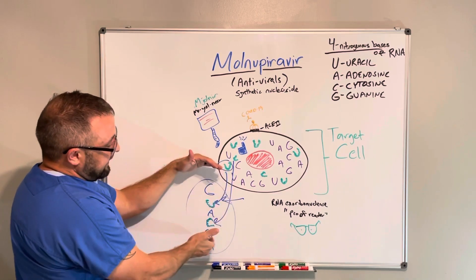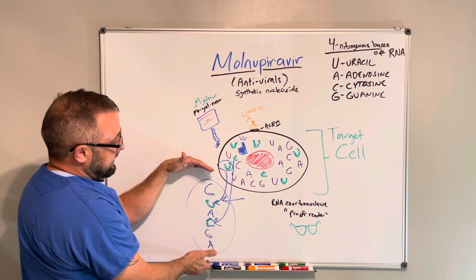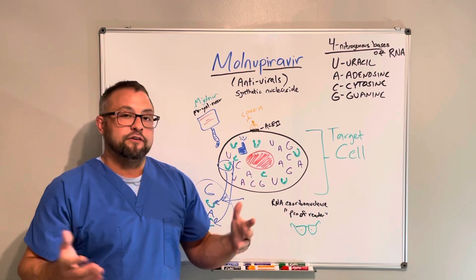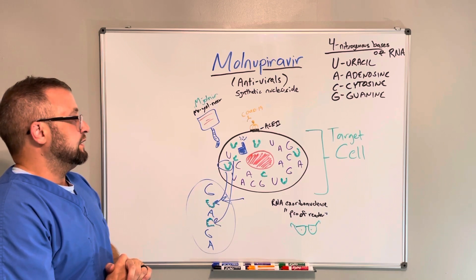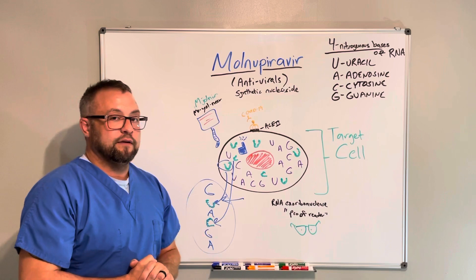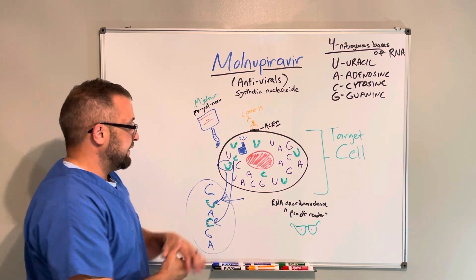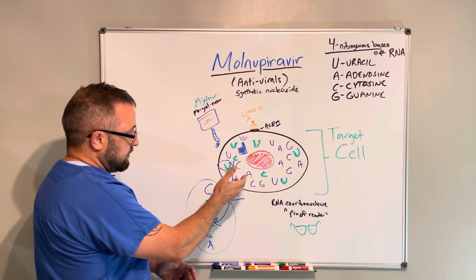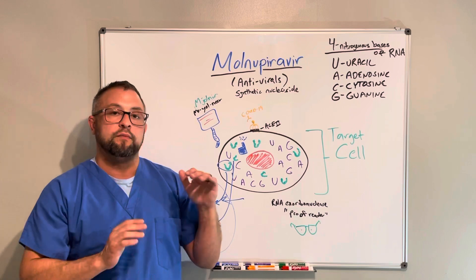When these antivirals replace the uracil or cytosine in the construction of the viral RNA, they render the virus useless — destroying it. It's just like if we were constructing a home with blueprints specifying wood, concrete, or rhubarb, and we knew exactly how to construct it.